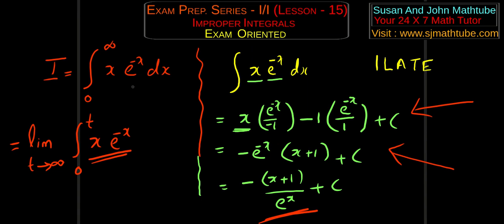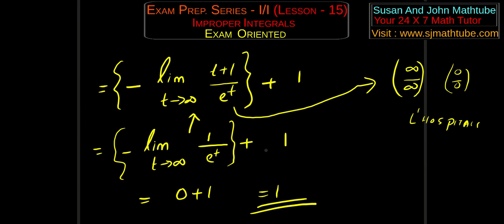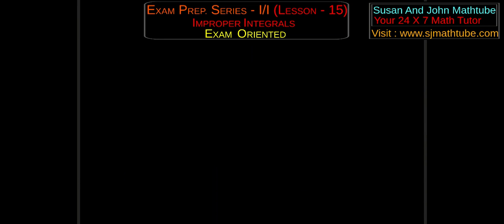The conclusion is: the given integral is improper because one of the limits is infinity. The given integral is convergent because the final answer converges to 1. Let's go for the next question.